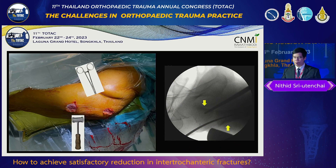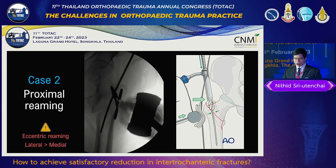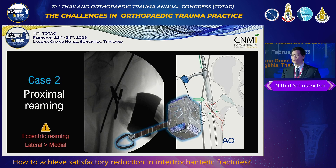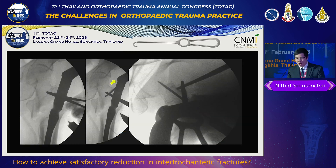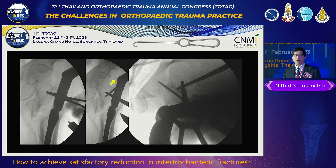I controlled the proximal fragment with the Kocher clamp and pressed it down, then used a hammer to elevate the distal fragment up. The lateral fluoroscopic picture confirmed acceptable alignment. Before performing proximal reaming, I used a hammer to compress the fracture site at the lateral side, which I will explain the importance of later. After nailing, a gap was found, so I used a bone hook inserted through the nail entry point incision to minimize the gap and restore AP alignment.